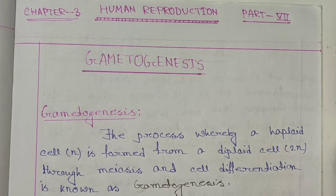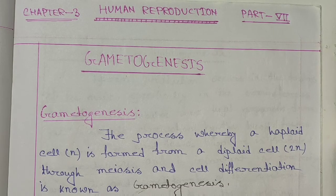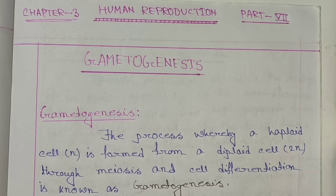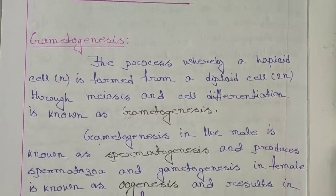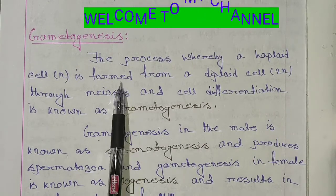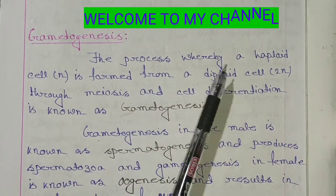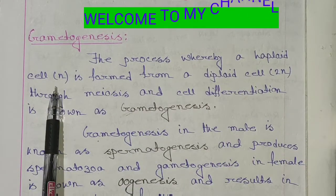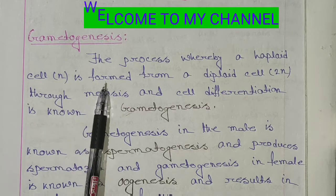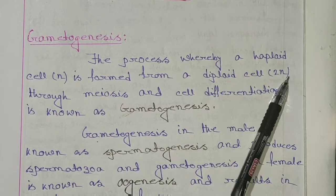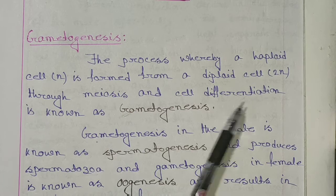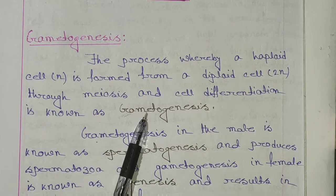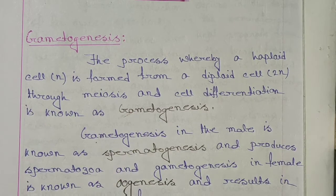Hello guys, welcome to my channel. Today's topic is gametogenesis. The process whereby a haploid cell (N) is formed from a diploid cell (2N) through meiosis and cell differentiation is known as gametogenesis.